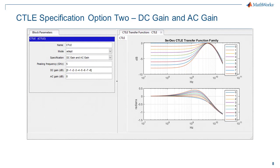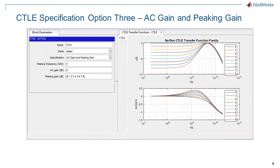The peaking gain is the difference between the DC gain and the gain at the peaking frequency in dB. The second option is DC gain and AC gain — similar to the first in that there are two gains and a frequency to specify. The AC gain is the gain at the peaking frequency in dB. The third option is AC gain and peaking gain, where the AC gain is the gain at the peaking frequency in dB and the peaking gain is the difference between the gain at the peaking frequency and the gain at DC in dB.